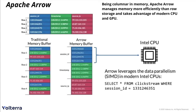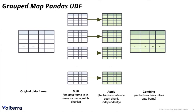The group pandas UDF approach works as follows: we have an original DataFrame consisting of all our data and a bunch of keys. We use those keys to group the data into different groups, and these groups then go into a pandas function where the function is applied to each group separately. The result of each group is a pandas output. This gives us a very efficient way to run what is essentially a Python function, but using Apache Arrow and pandas UDFs to do it in a very efficient and parallel fashion.